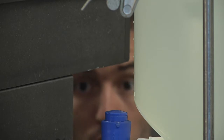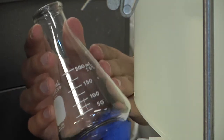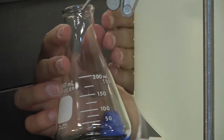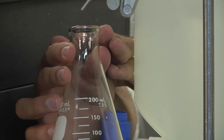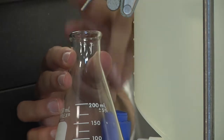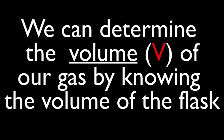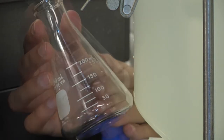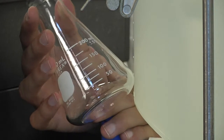Basically, what we are going to do today is fill a little Erlenmeyer flask up with liquid and evaporate that liquid so that it fills the entire Erlenmeyer flask and any excess is discarded out the top. Once the flask is full of gas, we can then condense that gas and weigh how much liquid is left over.